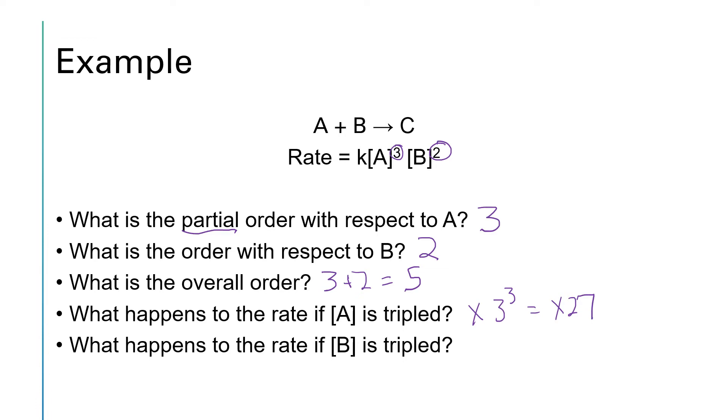What happens to the rate if B is tripled? Well, if we triple B, we're going to be multiplying by three, but that exponent, that order, says to square it. So the overall reaction rate would increase by a factor of three squared or nine.